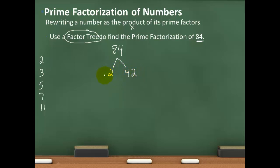Now I start the process over with 42. Since 42 is even, 2 goes evenly into it: 2 times 21 gives 42. Again, 2 is prime so no branches, but 21 is composite so it gets branches. Notice that 21 is not even, so 2 does not go into it. Going to the next prime, which is 3: 3 times 7 gives 21. Both 3 and 7 are prime numbers, so I can't continue anymore — the factor tree is done.